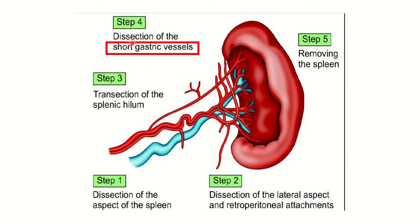Dissection of the short gastric vessels — we can see these vessels are the short gastric vessels arising from the splenic vessels. These short gastric vessels are ligated and dissected, then the spleen is removed. So the main points are: transaction of the splenic hilum and dissection of the short gastric vessels. These two points are very important.